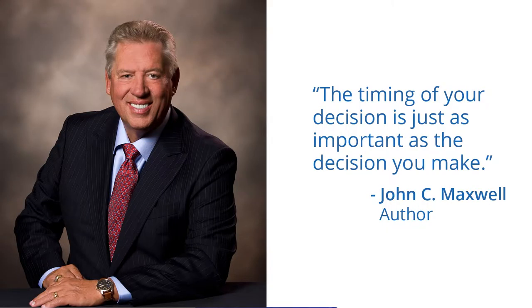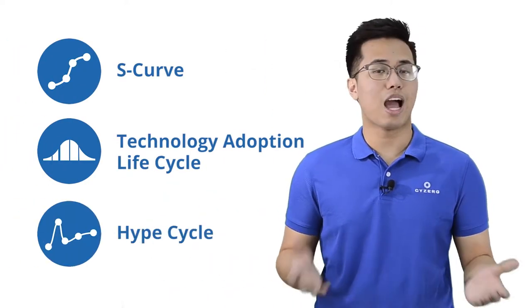As John C. Maxwell has said, the timing of your decision is just as important as the decision you make. Timing is a crucial part of decision making, and timing can make or break your company. Fortunately, the best time to implement warehouse technology can be determined by three simple frameworks: the S-curve of innovation, the technology adoption lifecycle, and the hype cycle. These three frameworks depict the natural evolution of technology, which in return will help us figure out the risks associated with adopting new technology, and the pros and cons of adopting technology at different points in time. So let's get into each one.